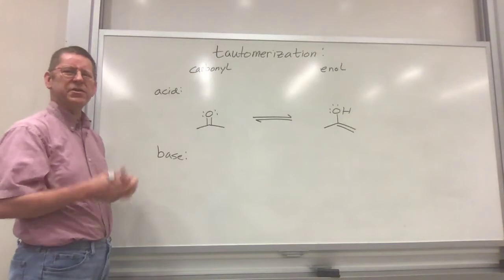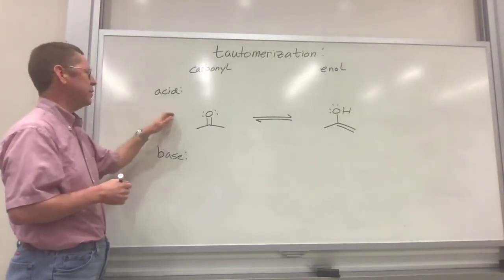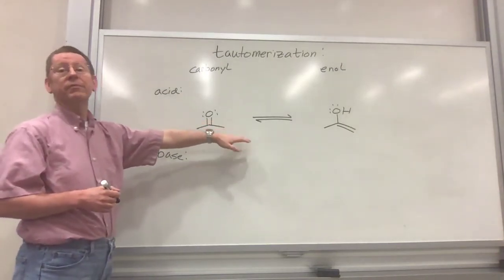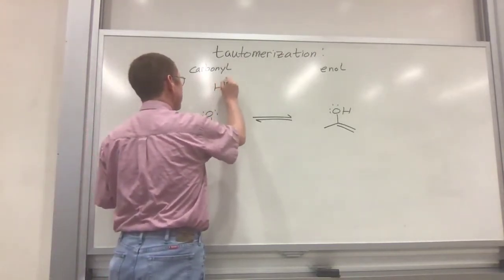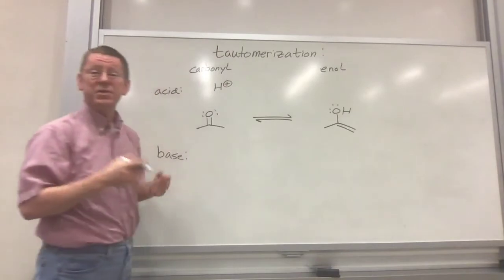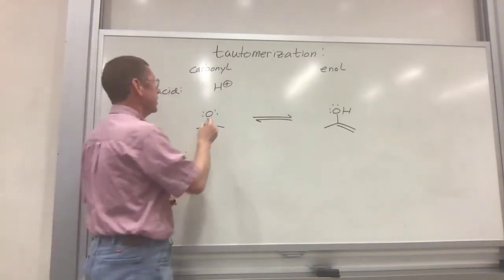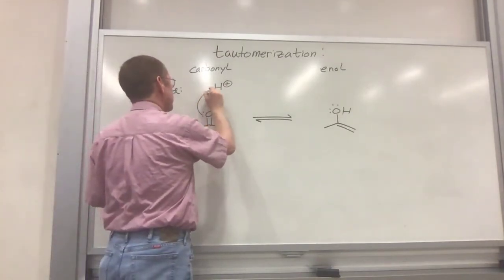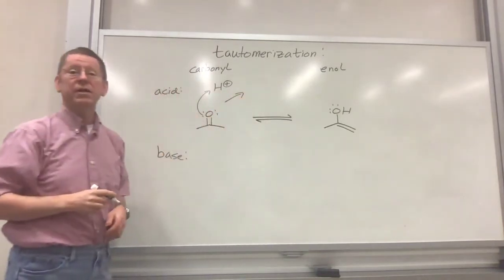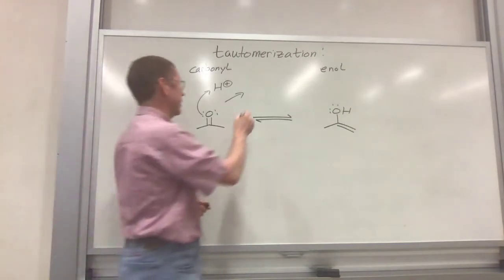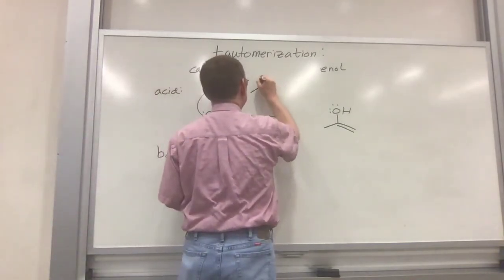So as you might guess, in an acid catalyzed pathway for this equilibrium, and it is an equilibrium, we're going to start off with some sort of acid. I'll just use that generic H plus. And that H plus will serve to protonate the carbonyl. We've done that before, many times. We protonate the carbonyl.